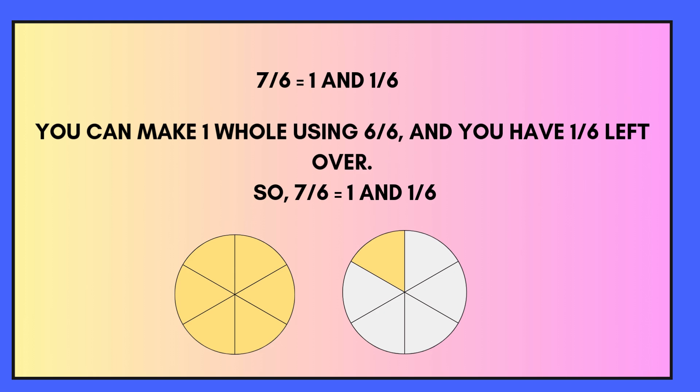7 sixths. We can get 1 six into 7, but we still have 1 left over. So the answer would be 1 — as in 1 whole — and 1 sixth, because we have 1 left over.